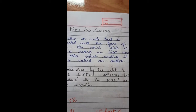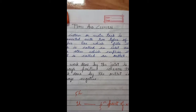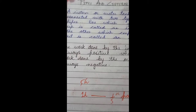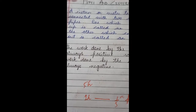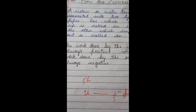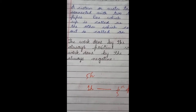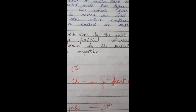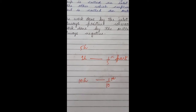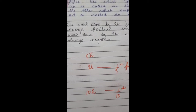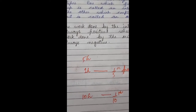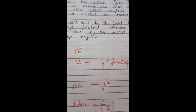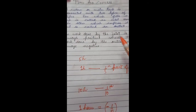Now similarly, suppose if an outlet empties a tank in 10 hours, then in 1 hour it empties 1/10th part of the tank. So we can say that the work done by the outlet in 1 hour is minus 1/10, because the work done by the outlet is always negative.